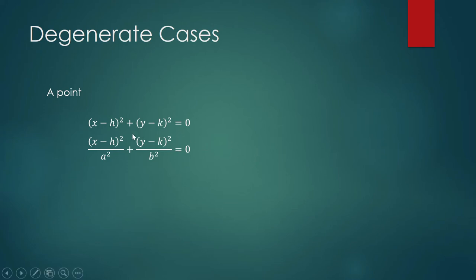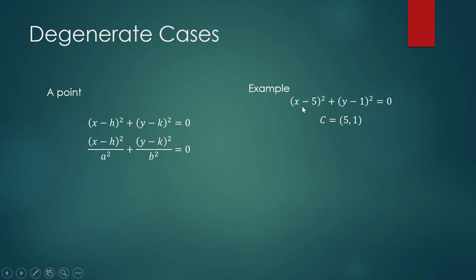Why? Because this will become 0 if x is equal to h and y is equal to k. For example, this one is 0, so that means this one plus that one is 0. That can only happen when x is 5, and this can be 0 only when y is 1. And so that's a pair of coordinates for your point: (5, 1).